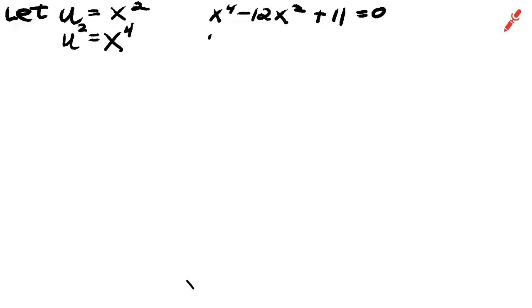This is when we use u substitution, which gives us temporarily a quadratic trinomial we can solve. And this is very factorable.